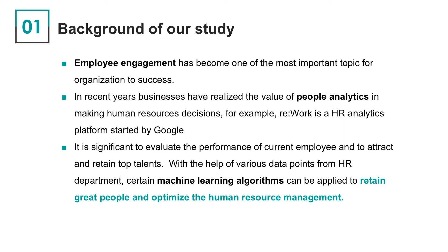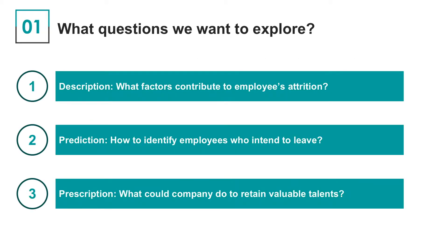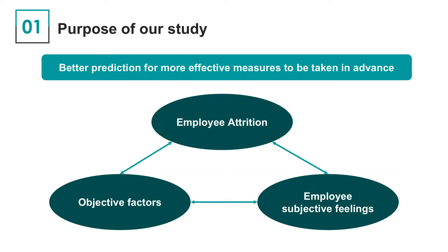Therefore, we would like to look at one important part of people analytics, which is attrition prediction, in this project. These are the three questions we want to explore regarding human analytics. We hope to see how objective factors such as commute distance and total working time, and employee subjective feelings, work together on employee attrition. And more importantly, how can we make better predictions for more effective measures to be taken in advance to retain good talents?